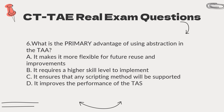Question 6. What is the primary advantage of using abstraction in the TAA? A. It makes it more flexible for future reuse and improvements. B. It requires a higher skill level to implement. C. It ensures that any scripting method will be supported. D. It improves the performance of the TUSH.